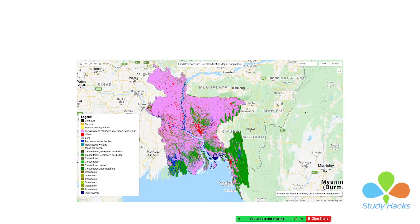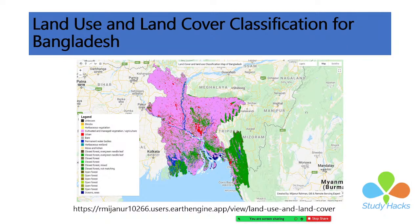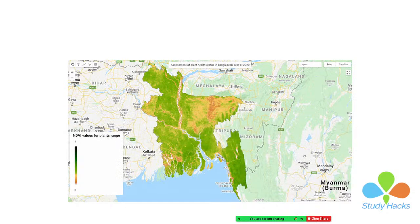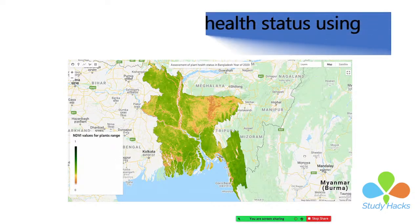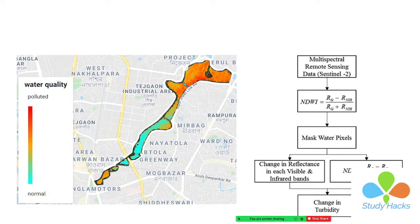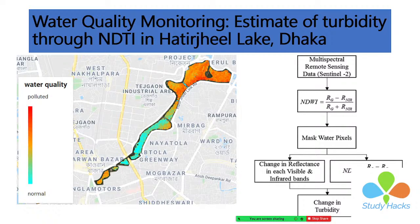This is another project for the land cover classification map of Bangladesh — this is a web application and you can easily access the link for a better view. This is another project for the assessment of plant health status, mainly using NDVI via the Google Earth Engine platform for the whole country boundary of Bangladesh. And this is another project for water quality analysis of Hathirjheel Lake — mainly here I show the change in turbidity. High turbidity means the water is polluted; low turbidity means the water is normal.